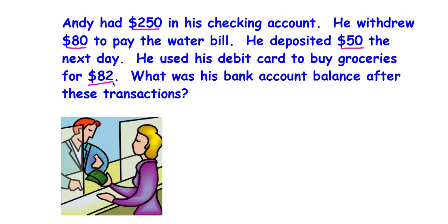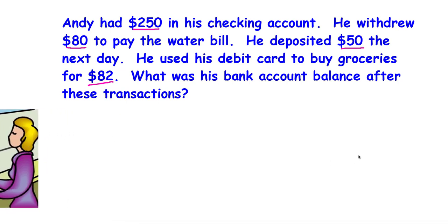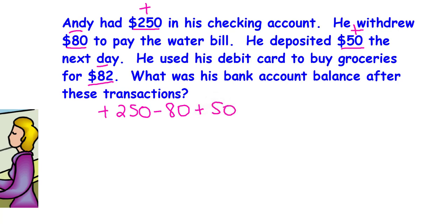Pause the video and do this yourself. I'm going to look at this problem. If it says Andy had $250, that's positive — it says he has it. He withdrew $80 to pay the water bill — that's negative, it takes money away from him. He deposited $50 — that's a positive number. He used his debit card to buy groceries for $82 — that's negative. So I'm going to put positive $250, negative $80, positive $50, and negative $82.